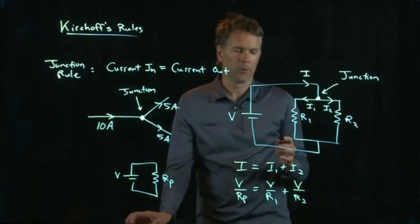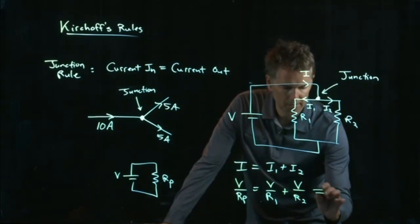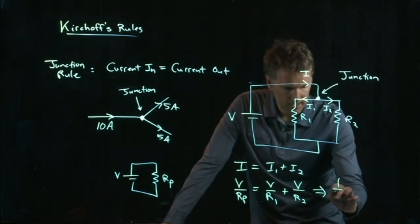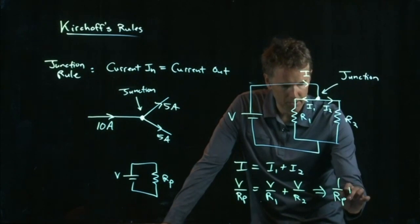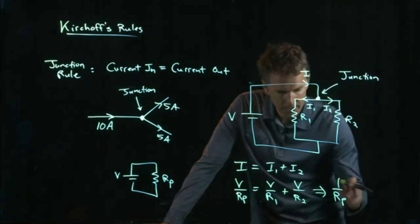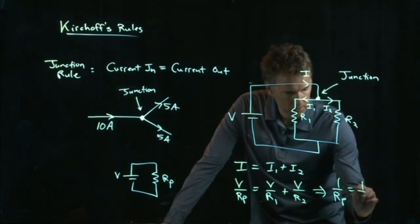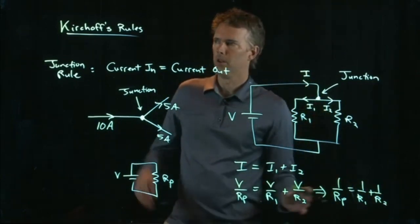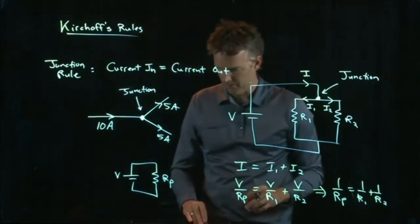Okay? And so this is what we were talking about earlier. We can cross out all the V's. They're all the same. And we get the parallel series, or the parallel resistor rule, which says 1 over Rp equals 1 over R1 plus 1 over R2. Okay? This is a direct result of Kirchhoff's junction rule.